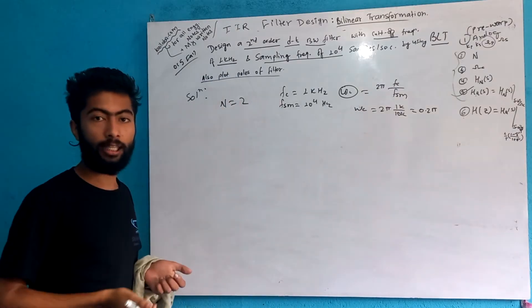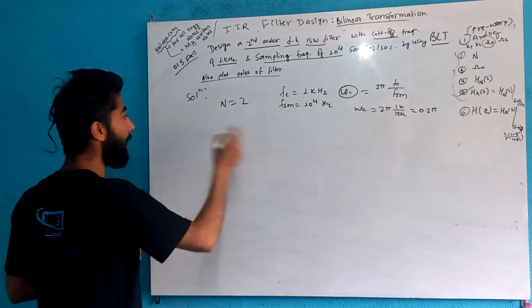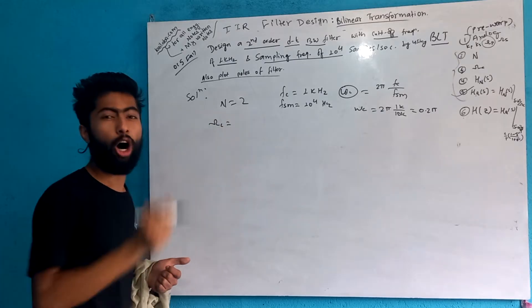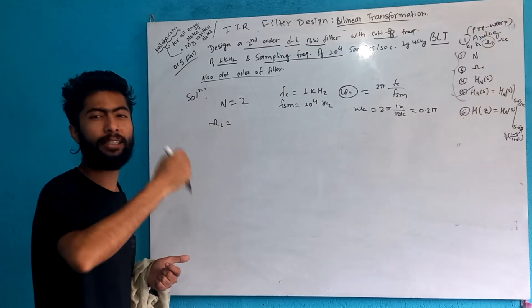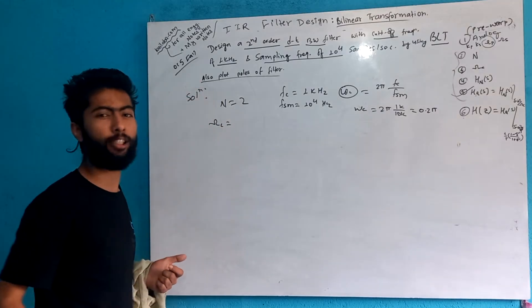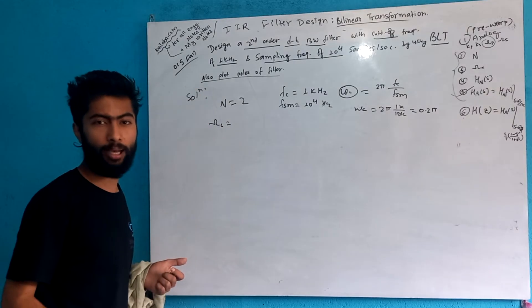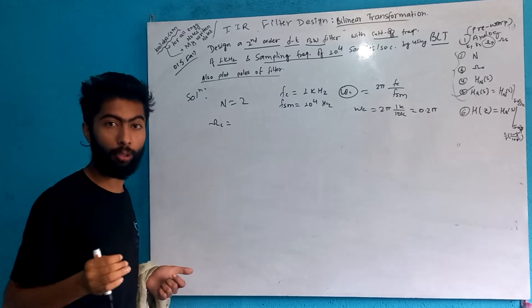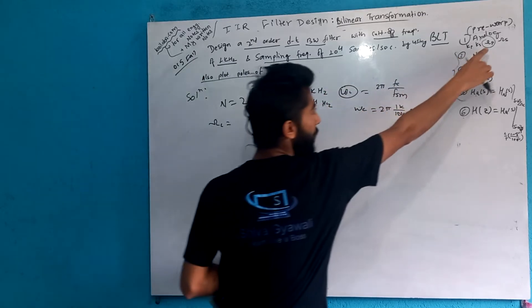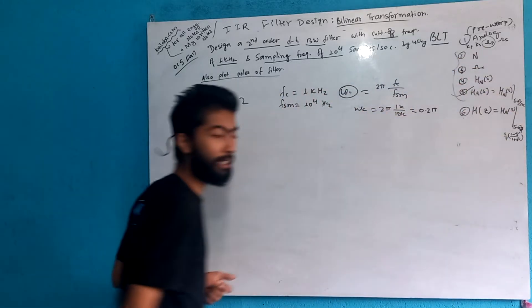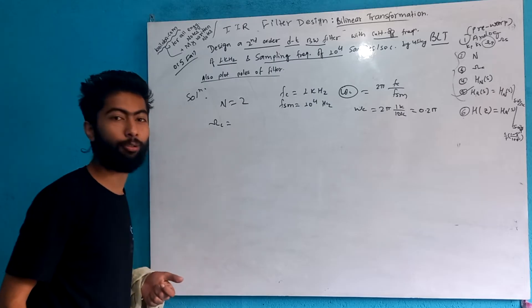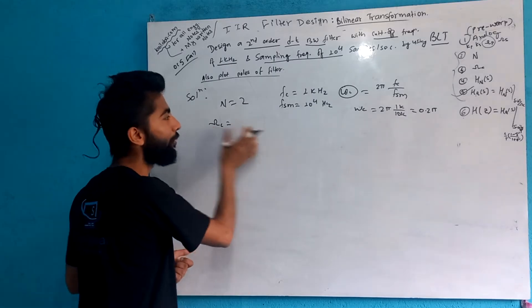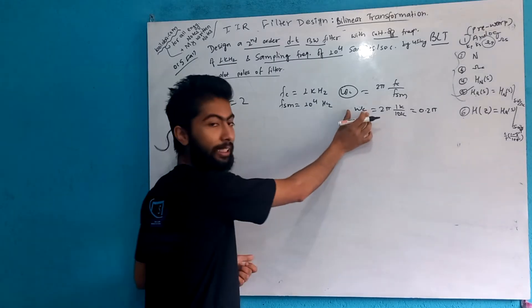Now we need to find the analog prototype cut-off frequency. The formula is: omega_p divided by (10 to the power 0.1*kp minus 1) to the half power. From this we can find omega_p and omega_s, giving us the value of the analog omega_c.